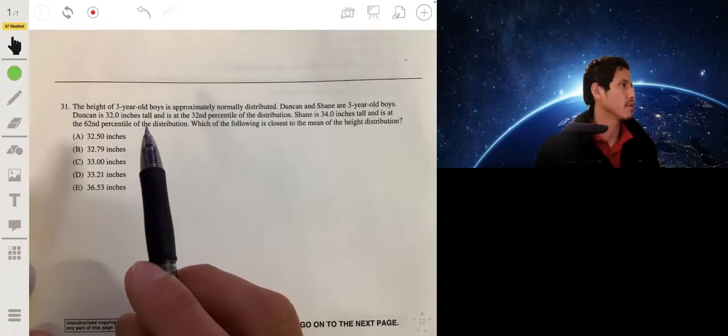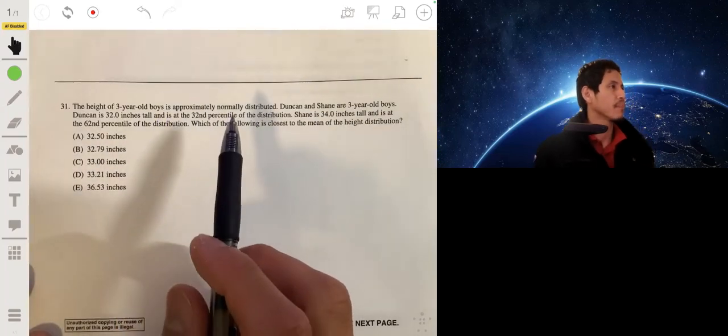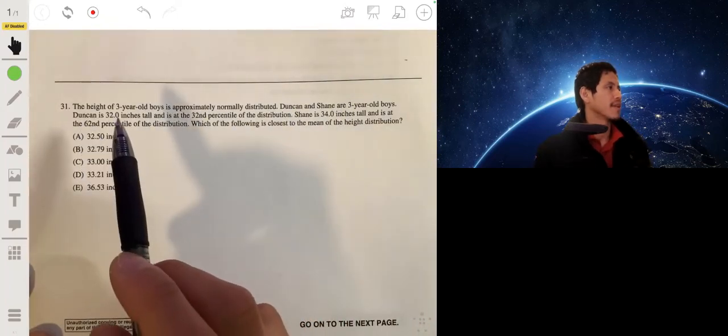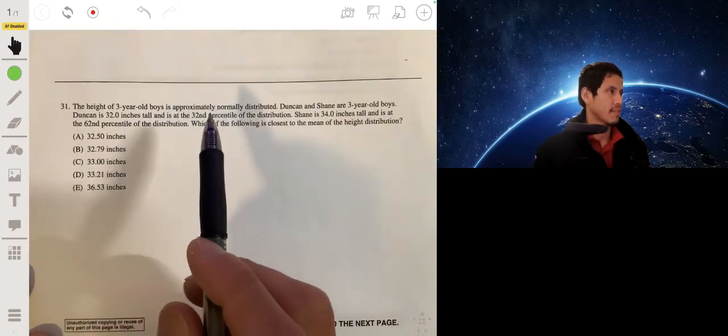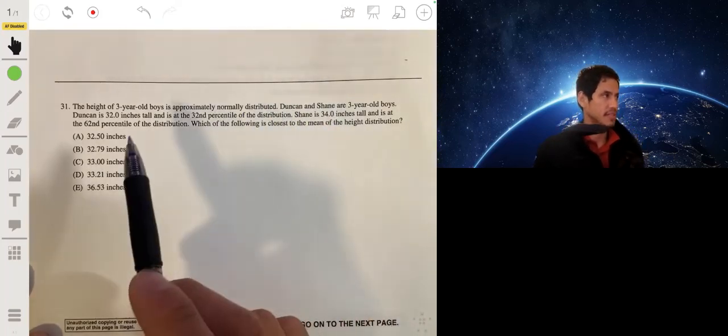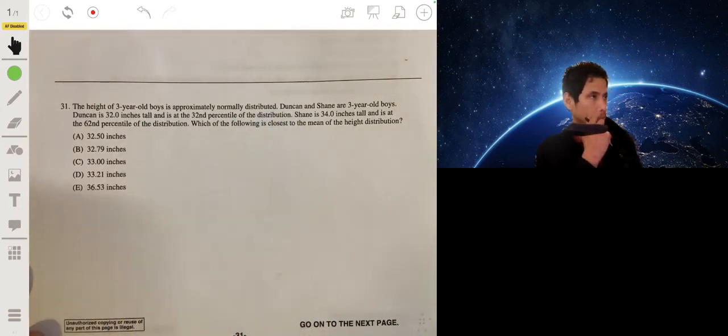Alright, so we have the height of three-year-old boys that's said to be approximately normally distributed. Duncan and Shane are three-year-old boys. Duncan is 32 inches tall and at the 32nd percentile of the distribution. Shane is 34 inches tall and at the 62nd percentile of the distribution. Which of the following is closest to the mean of the height distribution?